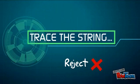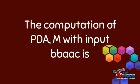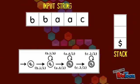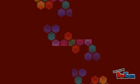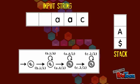Trace the string. Input string: B, B, B, A, A, C — stack. Current state. Read the first string, push lambda. Read the second string, push A. Next, read the third string, pop A.